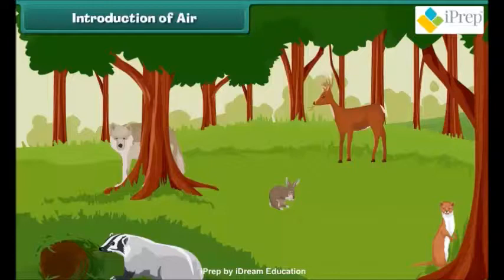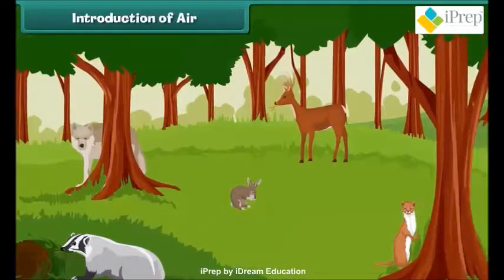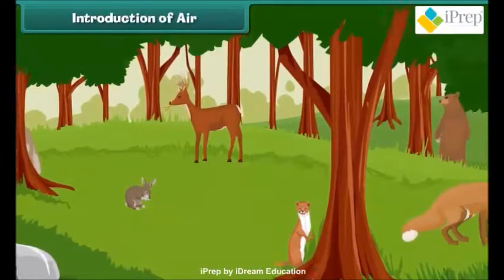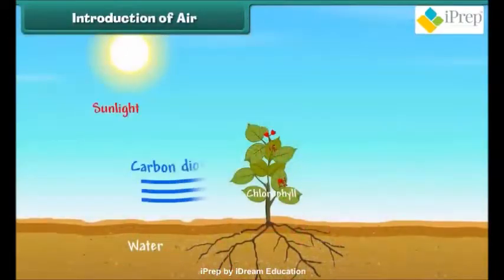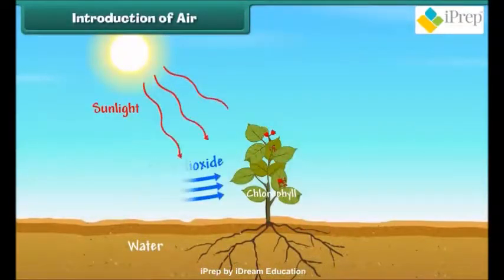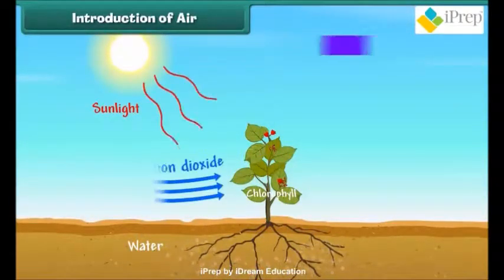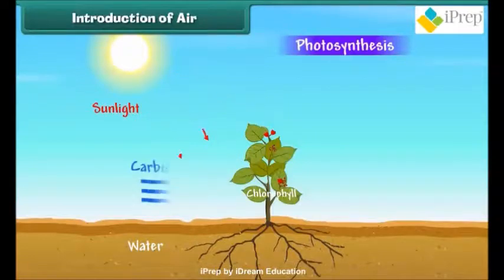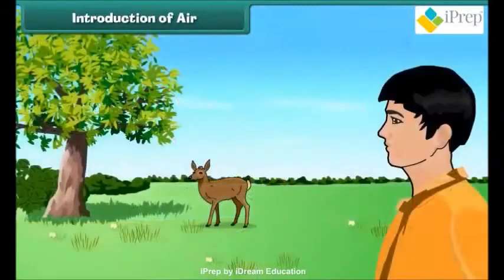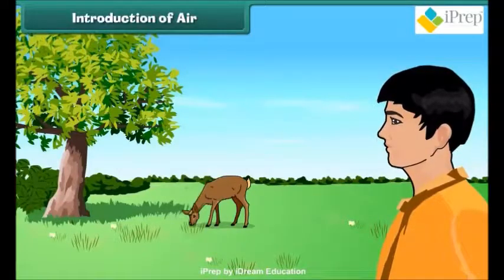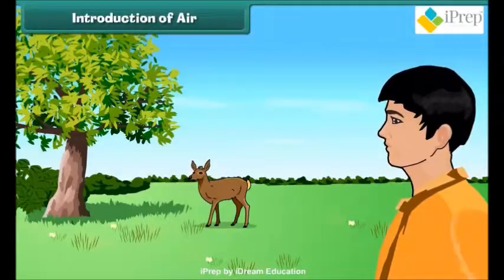Air is very important for almost all life on earth, including plants and animals. Plants need carbon dioxide from air to do photosynthesis and release oxygen into the air. Human beings and animals need to breathe air to get the oxygen they need to survive.